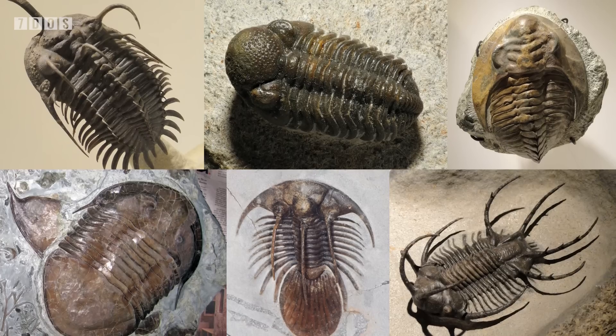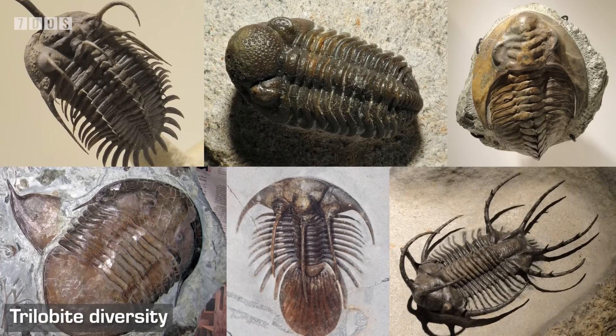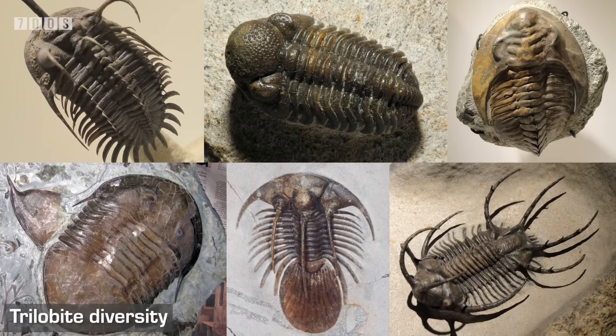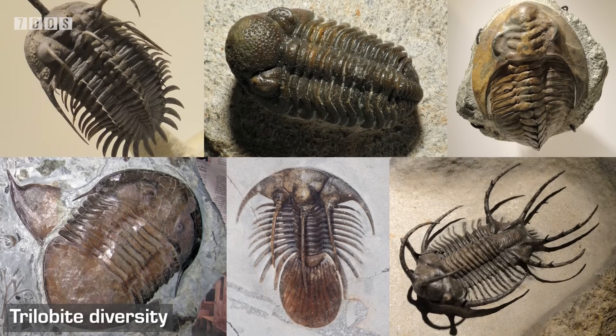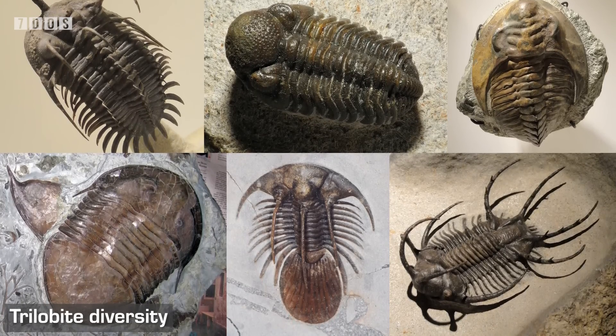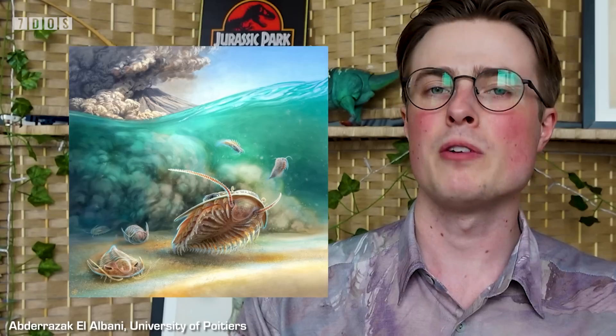First up in the paleontology news is the absolutely wonderful discovery of some extremely well-preserved trilobite fossils that preserve the internal soft tissue features of these little critters. Trilobites are a lineage of marine arthropods that existed for almost 270 million years, long before the dinosaurs first appeared. They were amazingly diverse animals, with more than 22,000 species named so far. Trilobites are well known for fossils preserving their hard exoskeletons; however, their softer parts are not nearly as well understood. This new research reports on trilobite fossils found in rocks in Morocco.